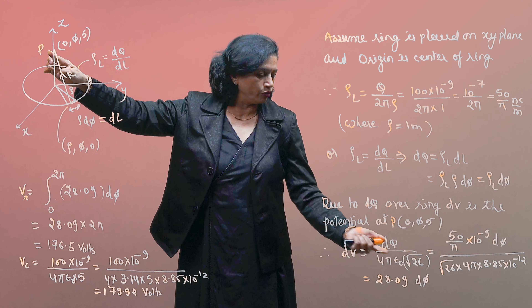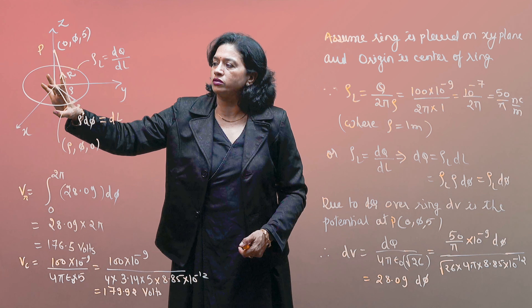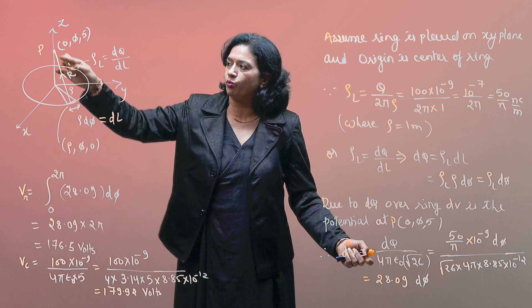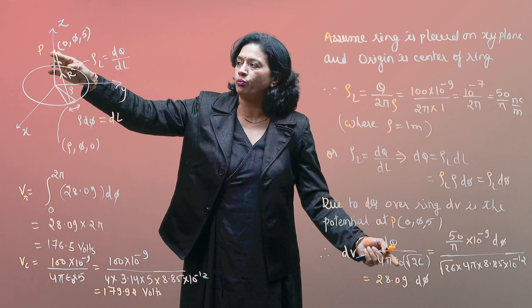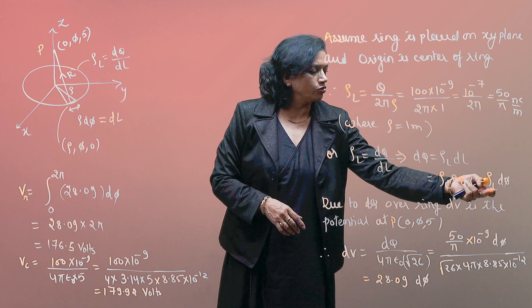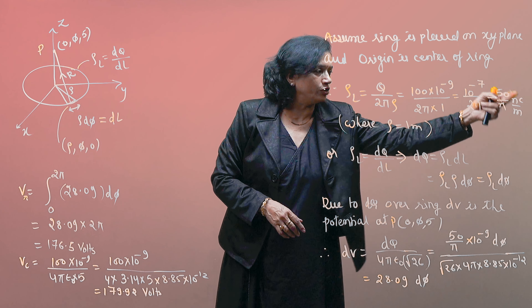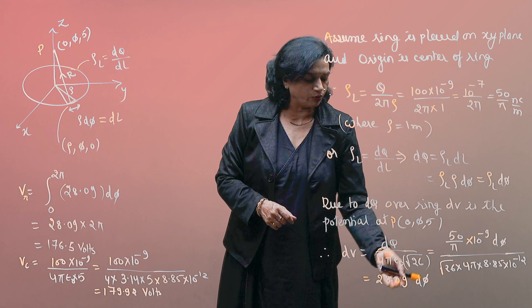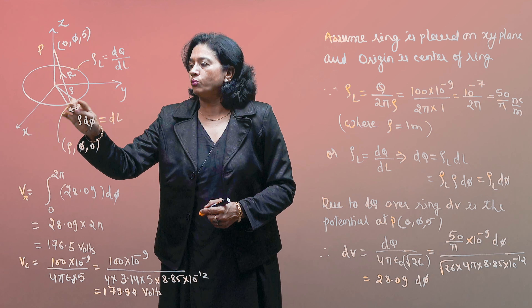The distance from dq to point P is √26, because the ring radius is 1 meter and the height is 5 meters, so by the Pythagorean theorem the hypotenuse is √(1² + 5²) = √26. The potential due to dq at point P is dV = dq / (4πε₀ · √26). Substituting dq = ρL · dφ and the value of ρL, with 4πε₀ = 8.85 × 10⁻¹², the result is dV = 28.09 dφ.